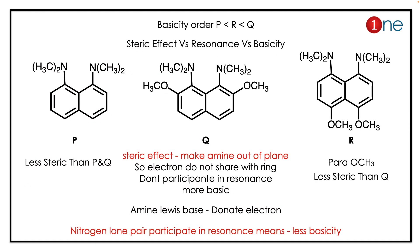The basicity order is P > R > Q. We are correlating steric effect, resonance, and basicity. Q is the more sterically hindered compound because of the ortho-methyl group, and the nitrogen is also bulky with the methyl group. So the methyl groups are out of the plane, meaning the lone pair does not participate in the ring — electrons are readily available, making it more basic as a Lewis base to donate electrons.